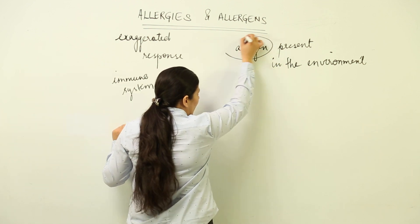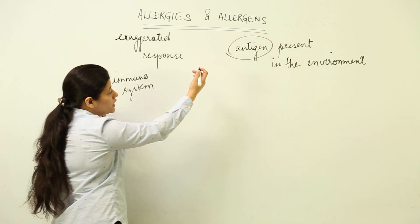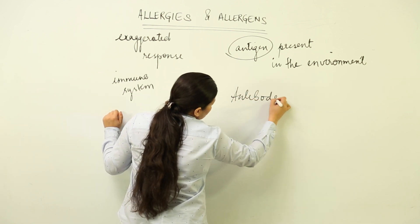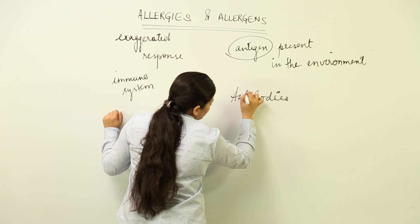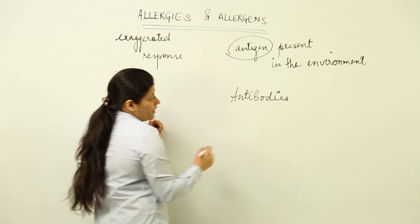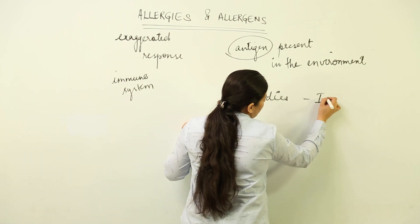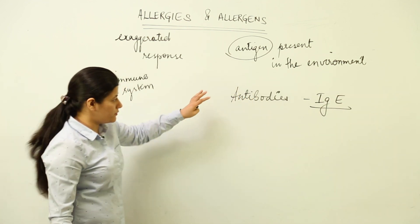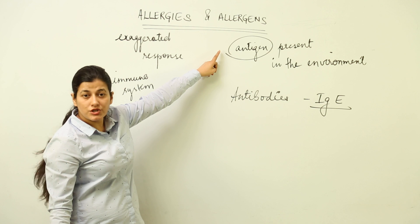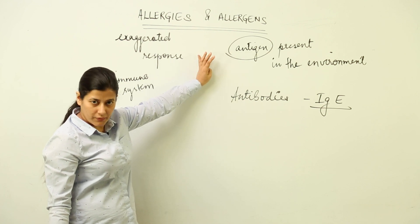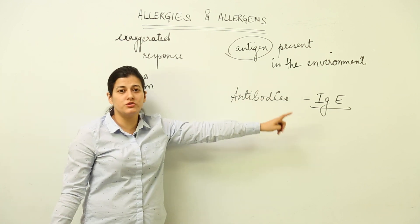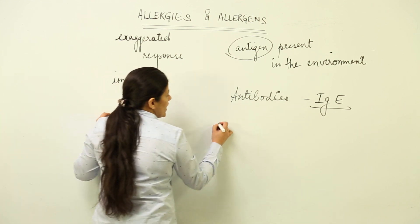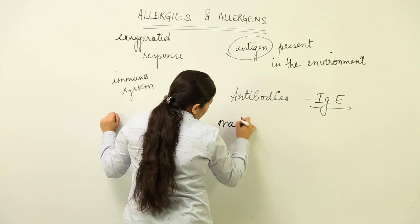How does allergy take place? First of all, because an antigen is involved and an immune response is happening against it, we have generation of antibodies. Now, what type of antibodies are produced? IgE — you have to remember — immunoglobulins of the E type are produced when allergens are present inside the body. When the body is exposed to allergens, it produces IgE types of antibodies.